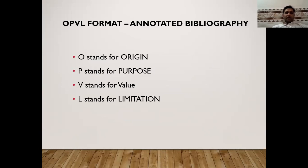Let me revise what the OPEVL format is. I'm sure most of you have familiarized yourself with what the annotated bibliography and OPEVL format stands for. O is the origin — the source of the article. P is the purpose of that particular research article, why that research has been conducted. There has to be a valid reason, identifiable in the research objective. V stands for value — the value it adds to the existing body of literature.